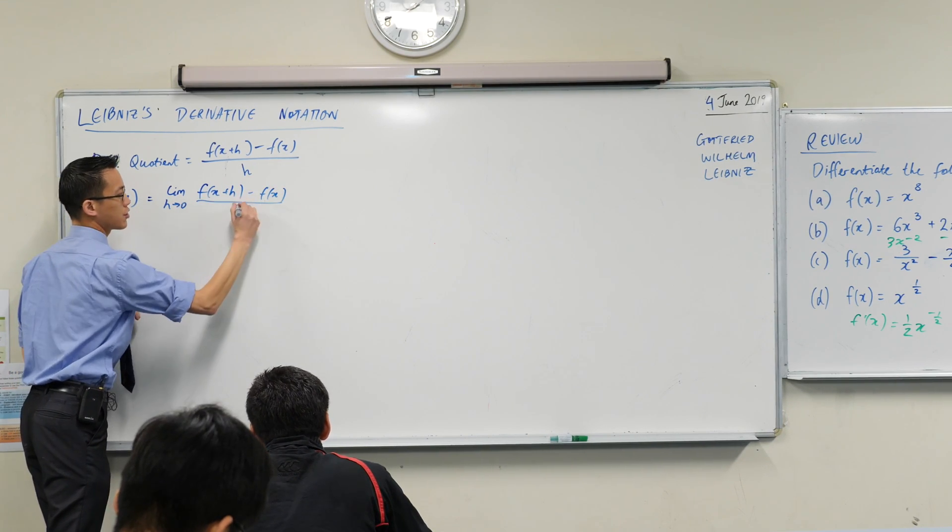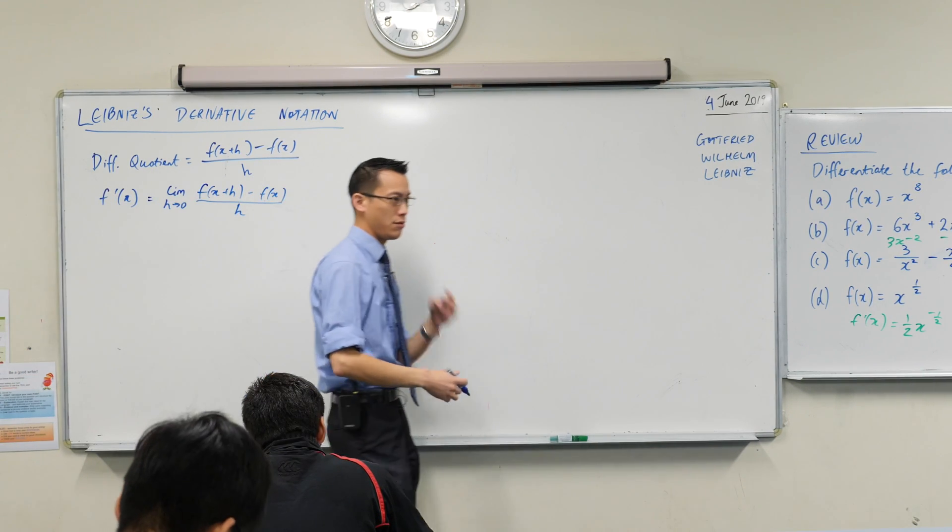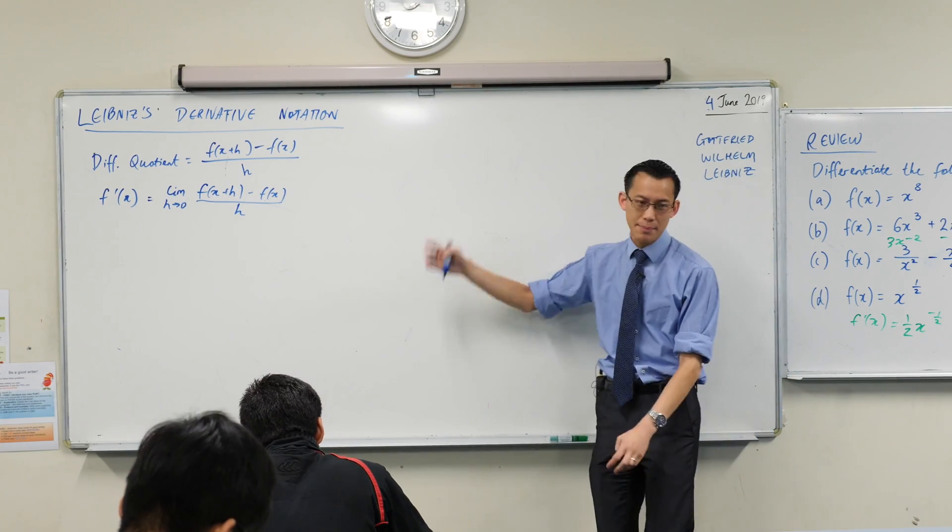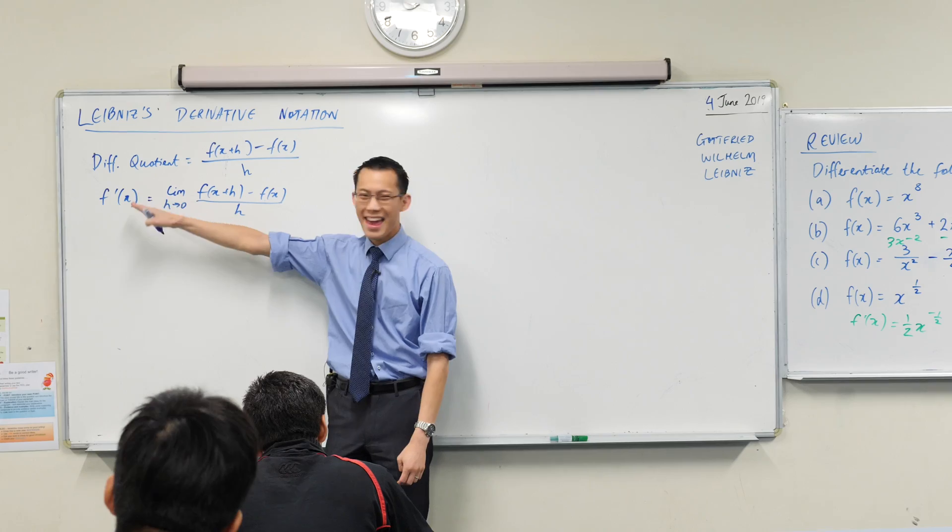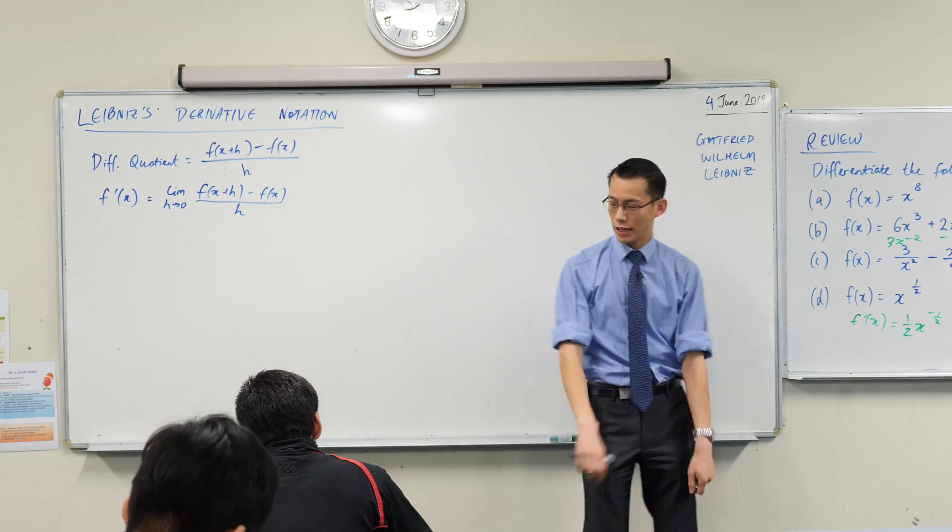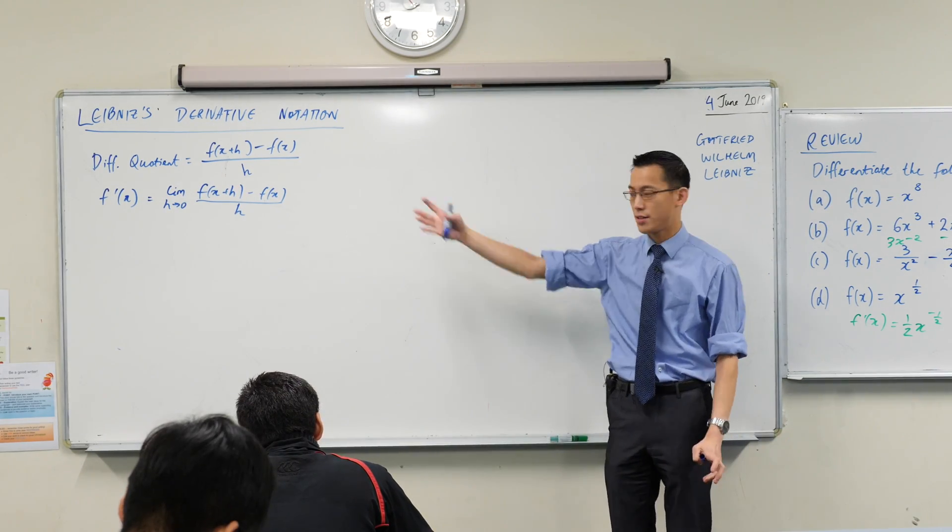And we said this is not just approximately close to the gradient. This is exactly the gradient at any particular value of x. So we've got our f of x notation, our f dash, and this is what we call differentiating. Okay, so we have this notation.